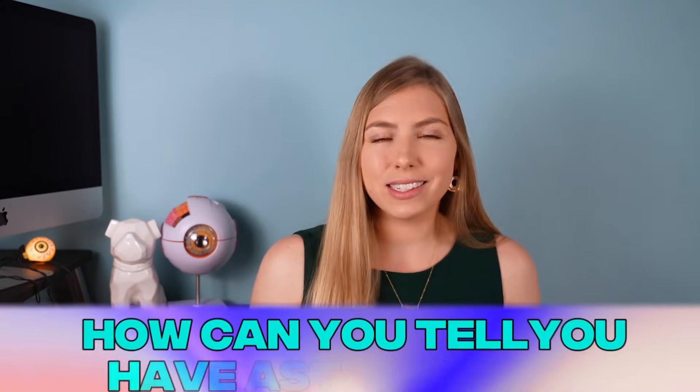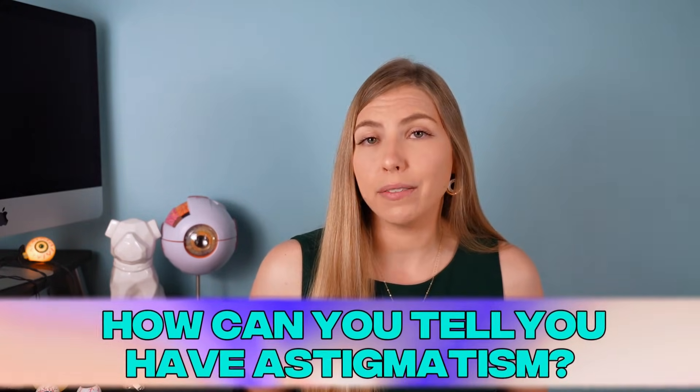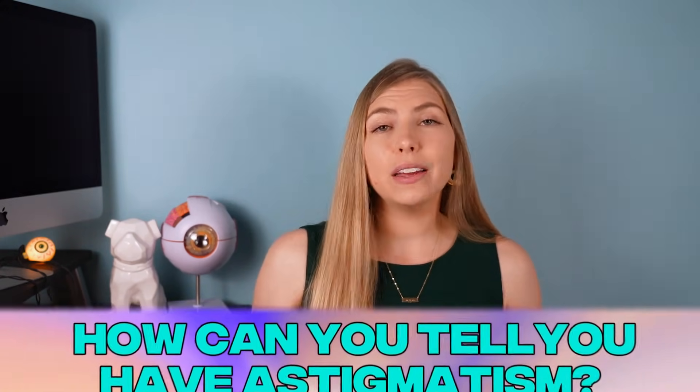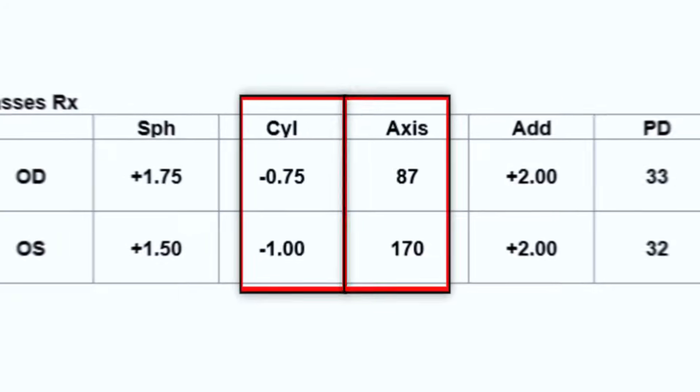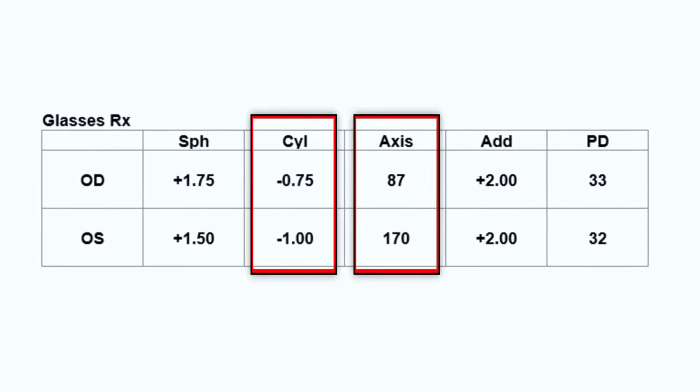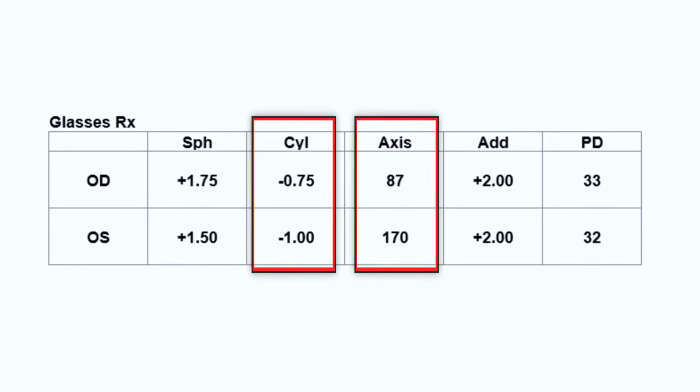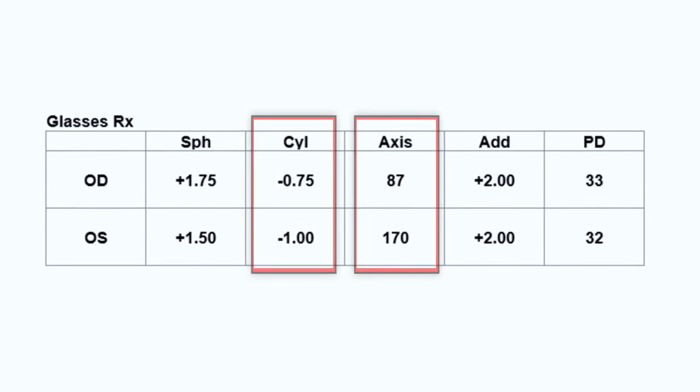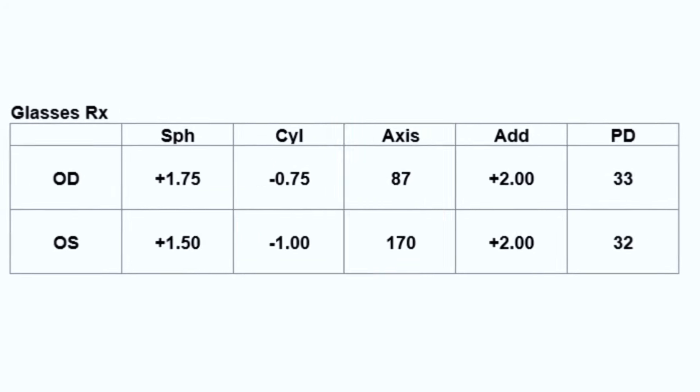So first we need to tackle: what is astigmatism and how do you know if you have it? If you have your glasses prescription and you look at the columns that say cylinder and axis, if there are numbers there, that means you have astigmatism.